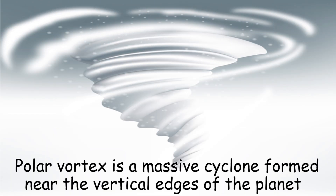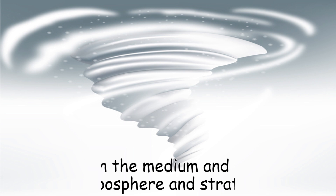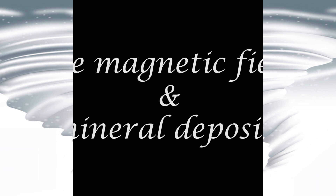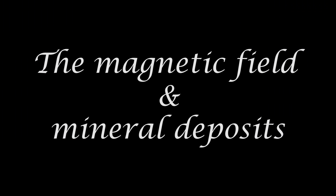Difference nine: polar vortex. An interesting phenomenon that occurs at earth's poles is the polar vortex, which is a massive cyclone formed near the vertical edges of the planet. Polar vortexes occur in the medium and upper layers of the troposphere and stratosphere.